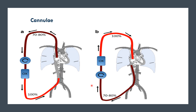Whatever the type of ECMO — veno-arterial or veno-venous — the drainage cannula takes blood from the patient, and the return cannula takes blood from the circuit back to the patient.